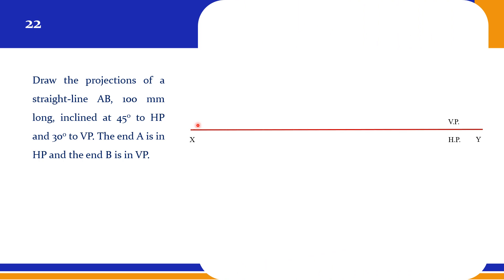Draw the projections of a straight line AB, 100 mm long. The true length is given as 100 mm, inclined at 45 degrees to HP — so theta is 45 degrees — and 30 degrees to VP — phi is 35 degrees. Up to here, it is a very normal problem.